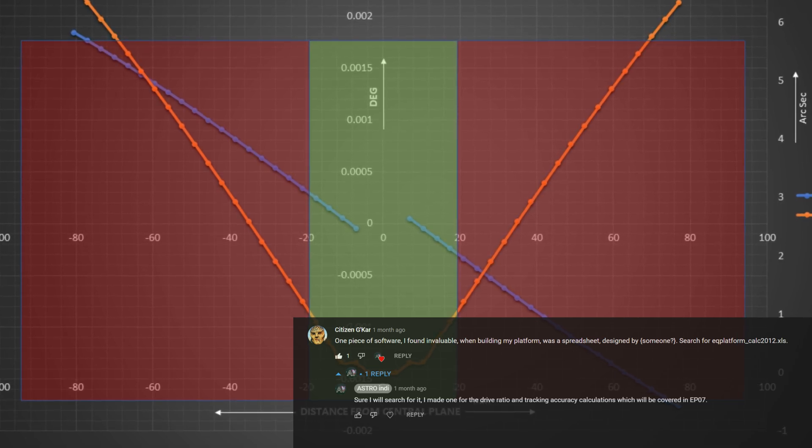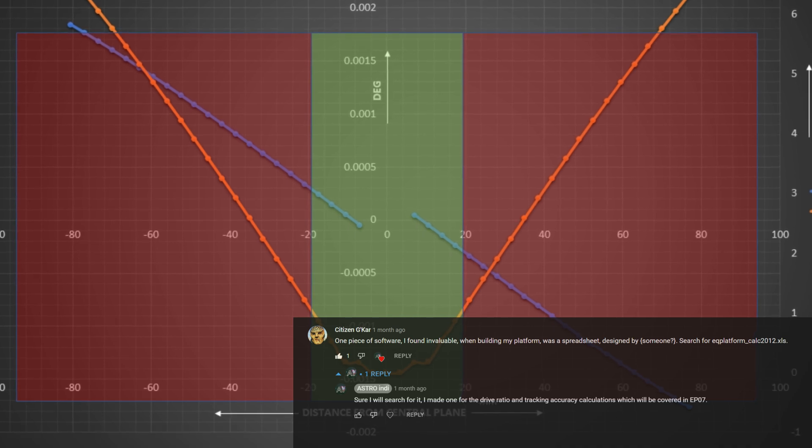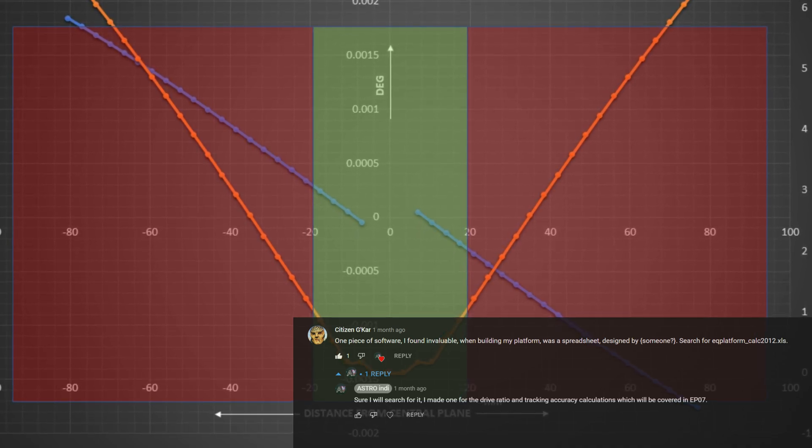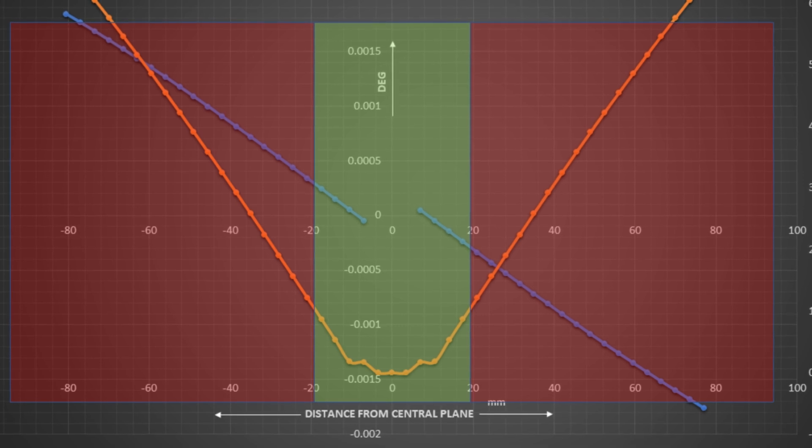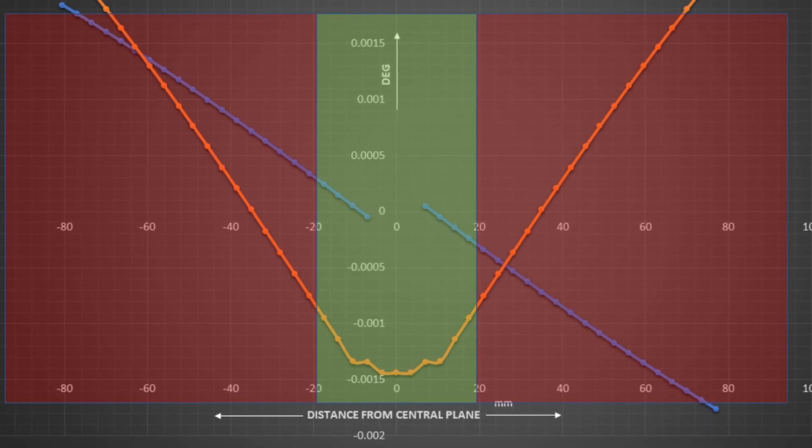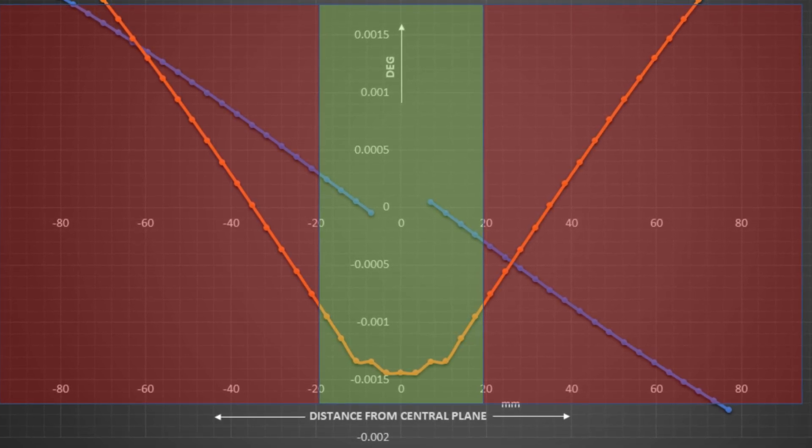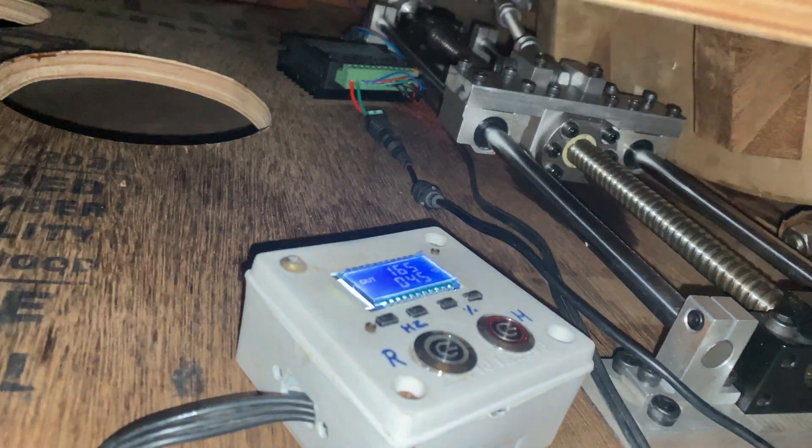I searched for that spreadsheet and went through it, and it seems to be doing a good job in terms of giving the measurements needed for cutting the parts for making your platform. However, I did not have a chance to verify that myself. I would love to hear from all of you if you have used this spreadsheet or are thinking of using it for designing your equatorial platform. Please do give feedback about that.